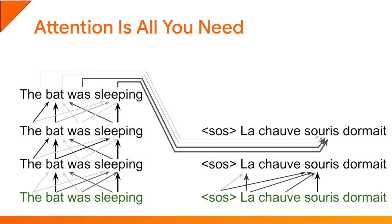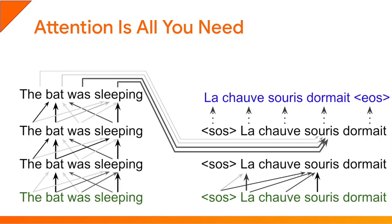Next, the decoder applies another attention layer, but this time it queries the encoder's outputs rather than itself. Each word representation in the decoder is used as a query to search for the best words in the encoder's outputs. For example, after the word 'souris,' the decoder may expect a verb, so the word representation for 'souris' now contains the fact that it should be followed by a verb. With this query, the encoder's outputs for 'was' and 'sleeping' are the best matches, pulling 'souris' strongly in that direction, effectively approaching the word representation of the next word 'dormez.' The decoder continues alternating between self-attention and attending to the encoder outputs until the word representations look like those of the target words.